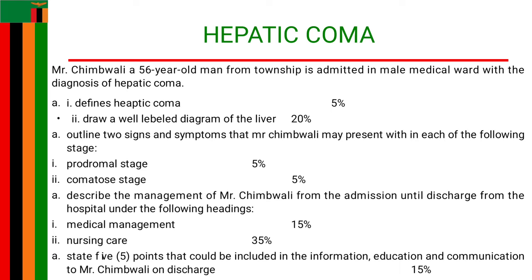Some of the investigations include history taking — the patient will present with a history of liver disease such as liver cirrhosis. For physical examination, the patient will present in an unconscious state and also with jaundice. Other investigations include a hepatic scan, which will show liver damage; a liver function test, which will show abnormalities in the liver; an ultrasound scan, which will show damage to the liver; and magnetic resonance imaging, which can show inflamed brain meninges. So at least five investigations under medical management.